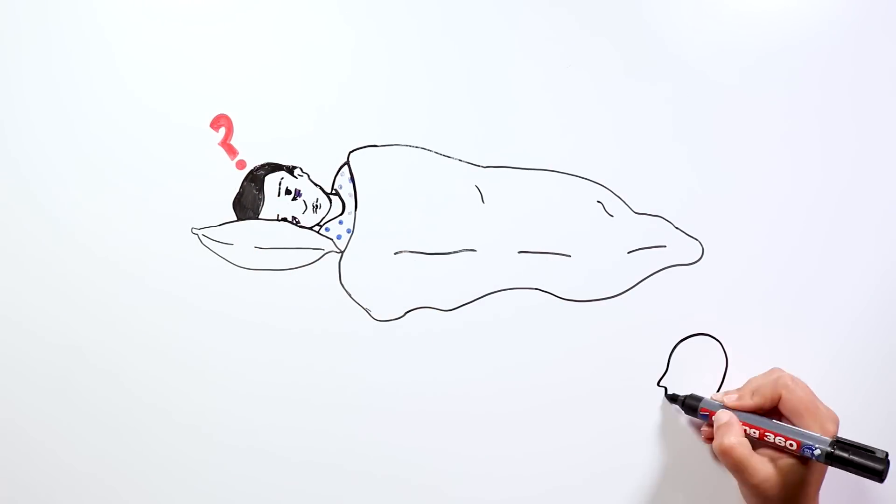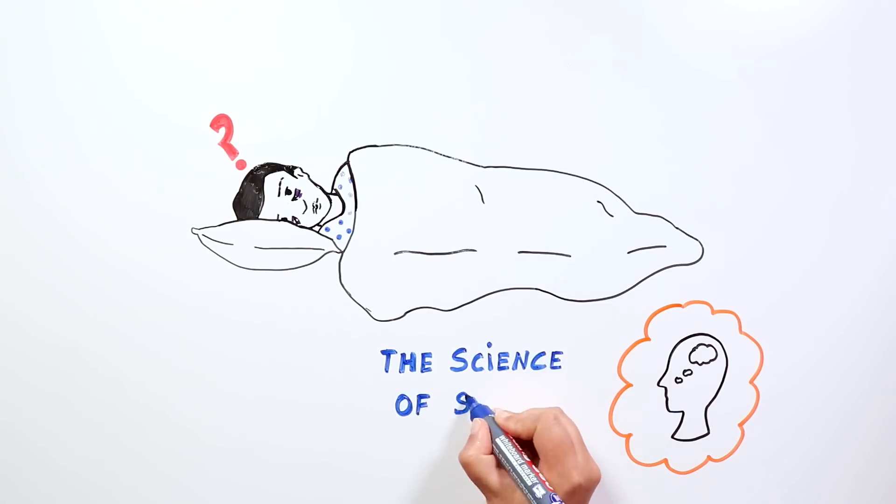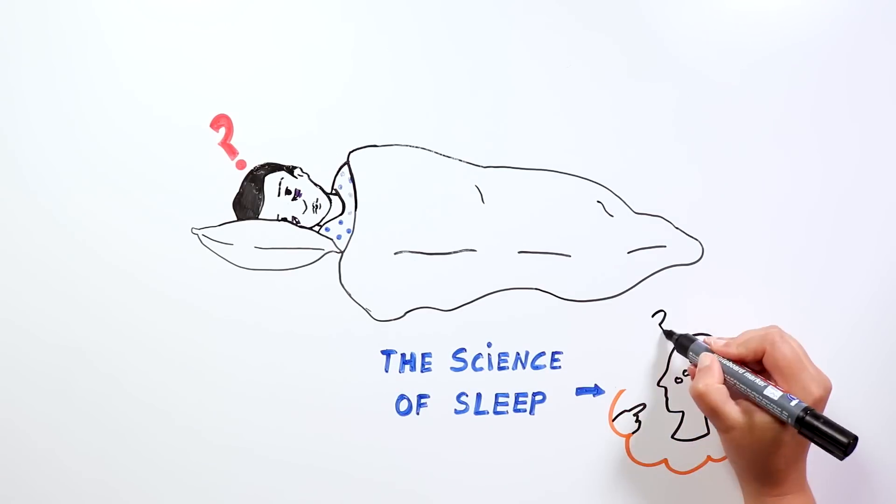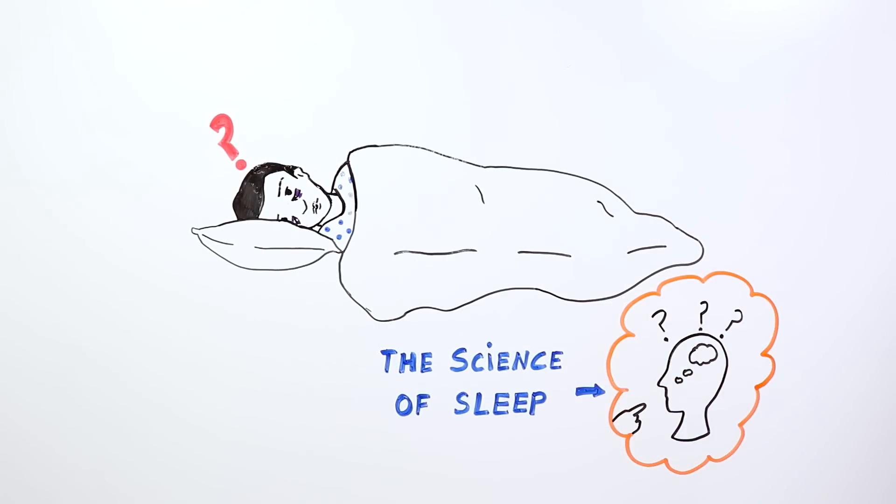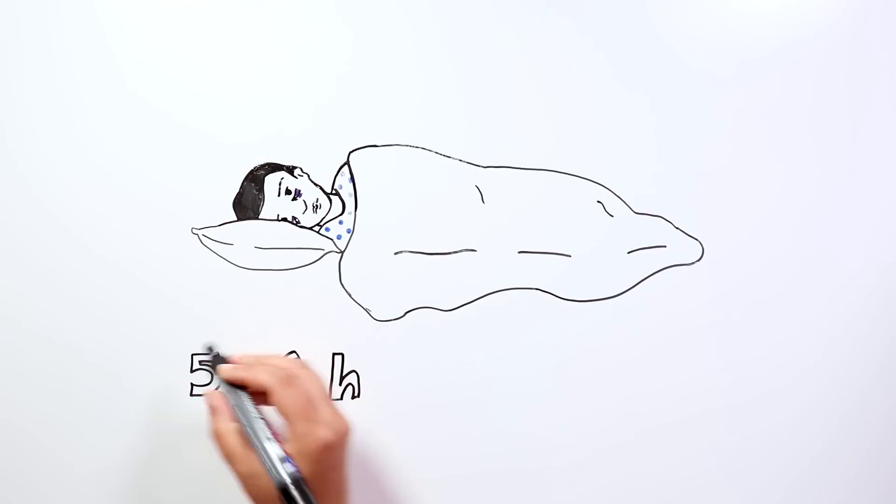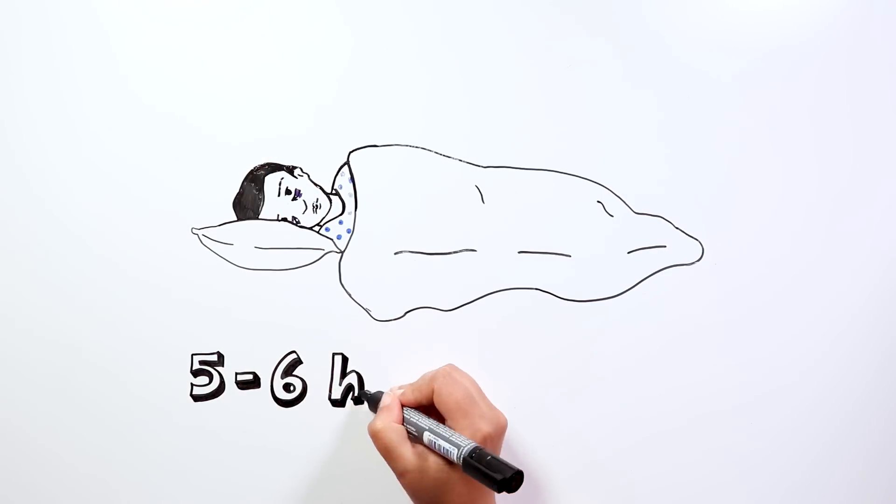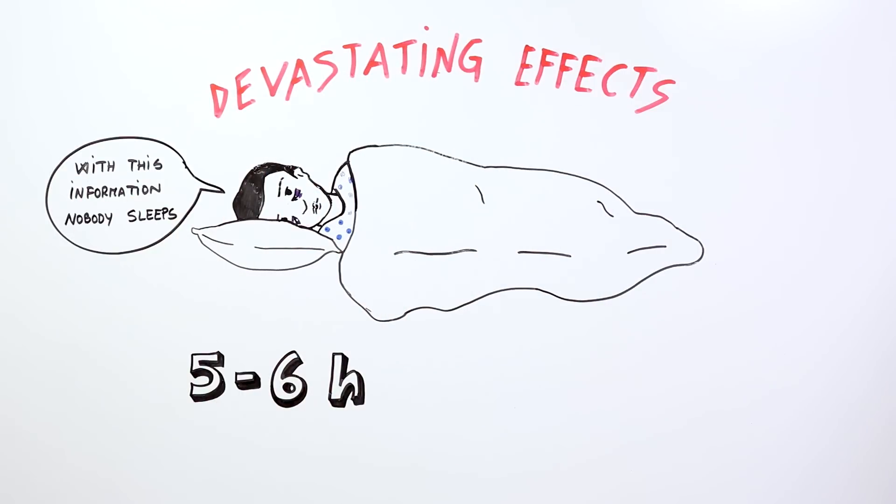The science of sleep is not as advanced as other sciences. We still know relatively little about why we sleep and how our sleep patterns evolved. However, we do know that the consequences of sleeping for only 5 or 6 hours a night could be catastrophic for our health.